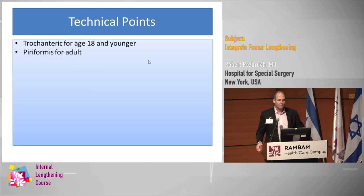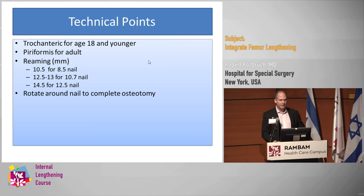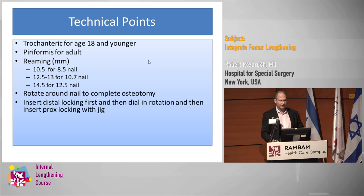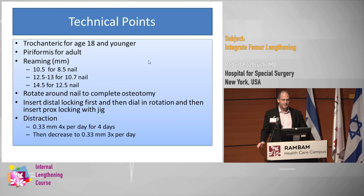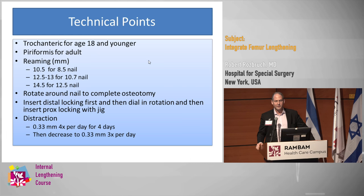In summary, some technical points: trochanteric entry for 18 and younger, otherwise piriformis for antegrade. We're generally reaming 2 millimeters over the nail diameter because we're using flexible reamers. I like to rotate around the nail to complete or confirm the osteotomy — that's why I routinely put in rotational markers. I like putting in the distal locking first, then dial in a little bit of rotation, and put in the proximal if needed. I'll be honest: I stopped doing the intraoperative distraction because I found it wasn't helpful, which saves a little time in the operating room.